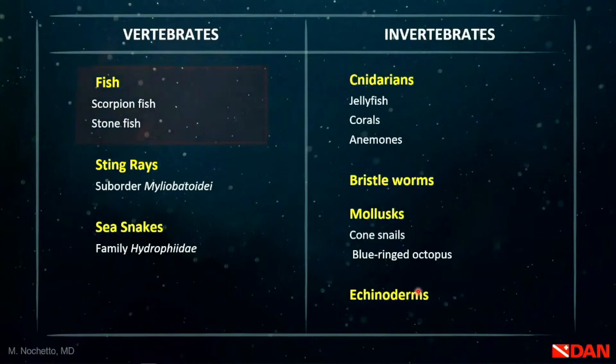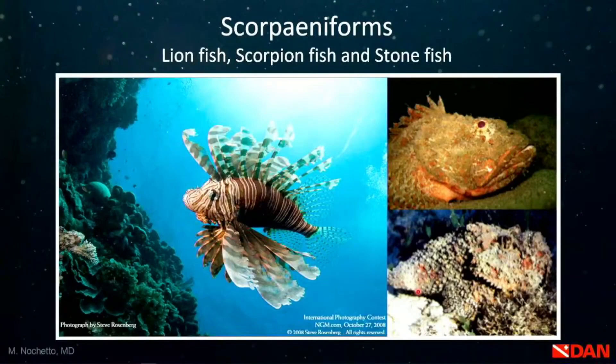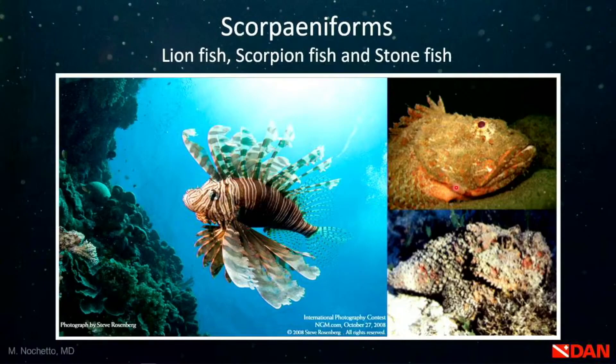Let's jump right in with fish. These are the scorpioniforms. We need to differentiate between two groups: the flamboyant species on the left — they want to be seen and want to scare you with their appearance — and the mimetic species on the right, which have absolutely no intention of being seen. They both belong to the same family, but it's particularly the mimetic species that tend to cause the most serious incidents.